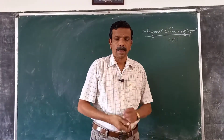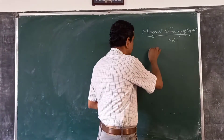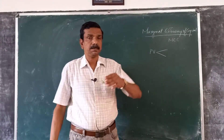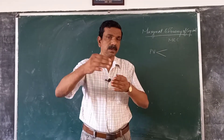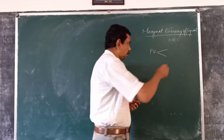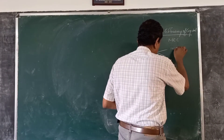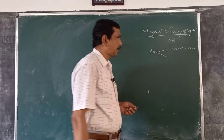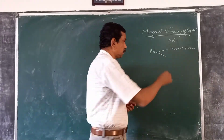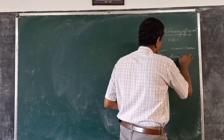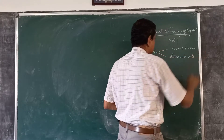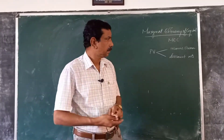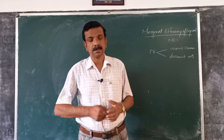In the previous class, to find out the present value of future income streams, we started with an expected income stream and a particular discount rate. Income stream R1, R2, R3, R4 and R5, and discount rates 4 percent, 5 percent, 6 percent, etc.